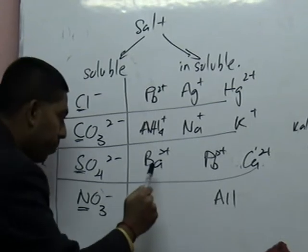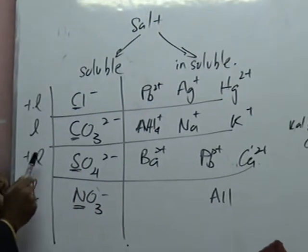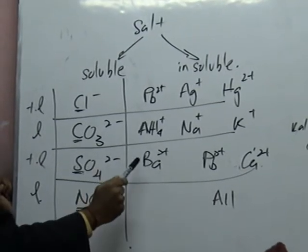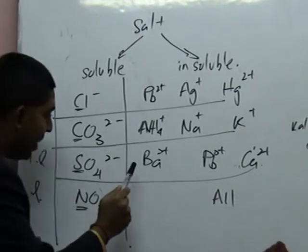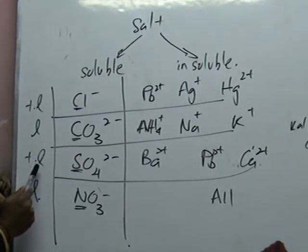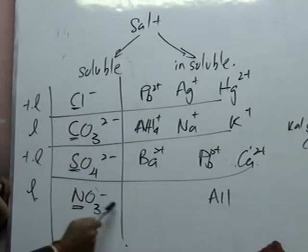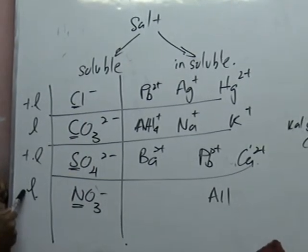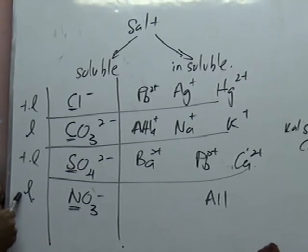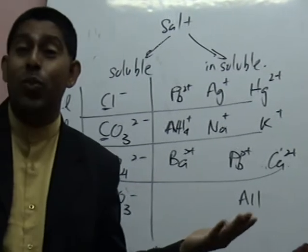For example, iron sulfate is soluble. Magnesium sulfate is soluble. And for nitrate: all nitrates are soluble — larut.